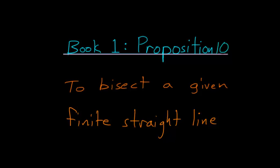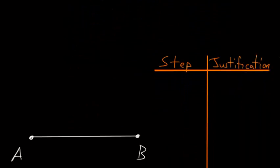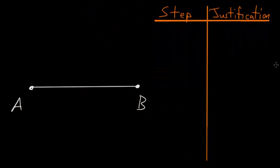Book 1, Proposition 10 of Euclid's Elements is a construction proof that focuses on bisecting a given finite straight line. So let's start with some line, which we can call AB, and our goal is to essentially cut this line in half at some point here.